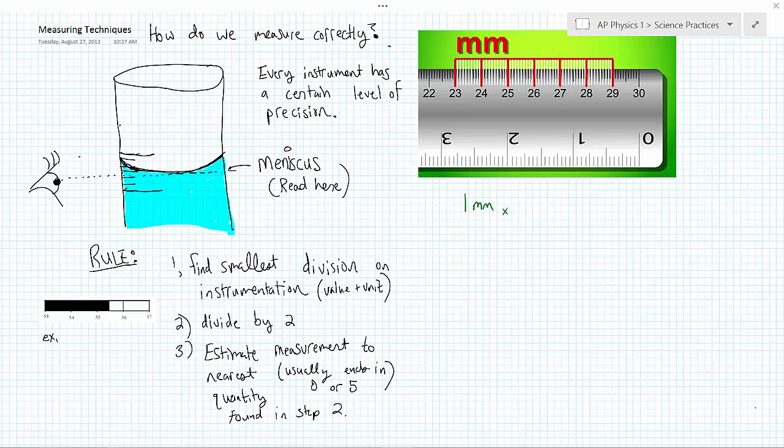Greetings, everyone. This is Mr. Moll, and in this podcast, I'm going to go over how to correctly use an instrument to make a measurement based upon that instrument's level of precision.